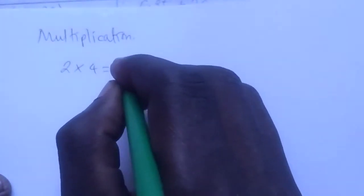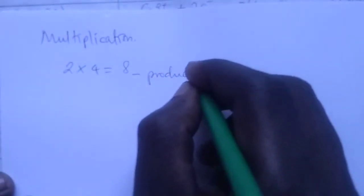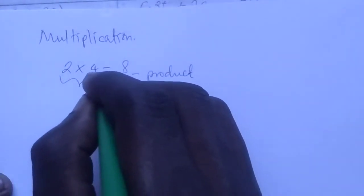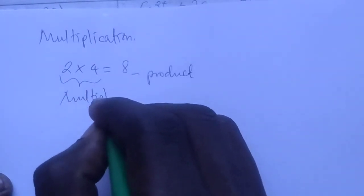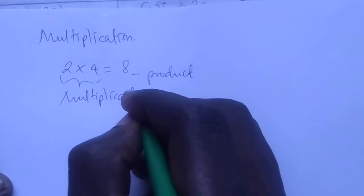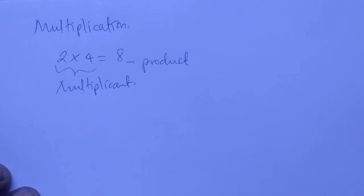For example, if two times four is equal to eight, eight is the product, but these two are called multiplicants. Different terms are used in mathematics to ask questions in various ways.